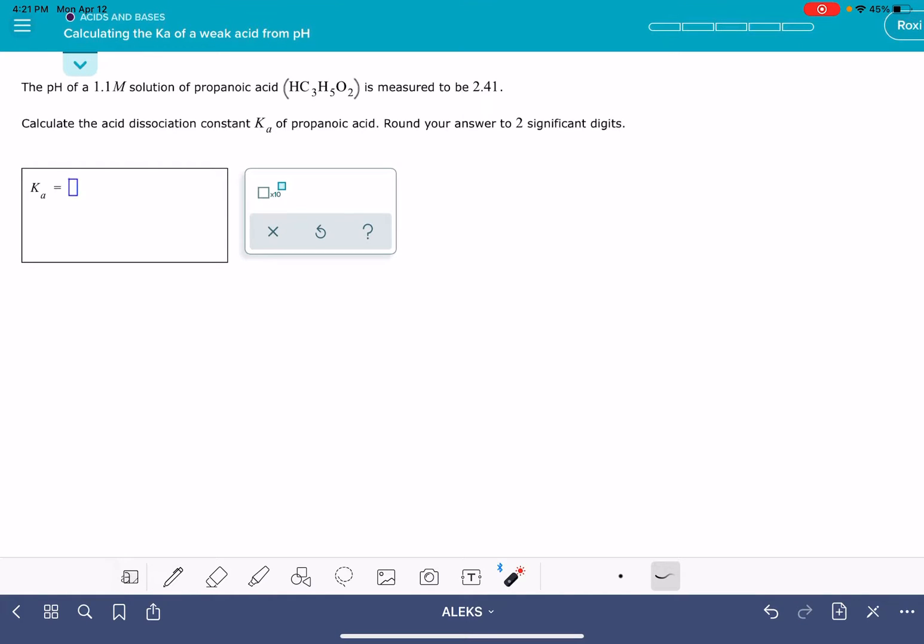In this video, I'm going to walk you through the problem calculating the Ka of a weak acid from pH. As the title suggests, you're going to be given information about a weak acid solution - the formula as well as its concentration, and the pH of the solution. Your goal is to calculate the value of the Ka.